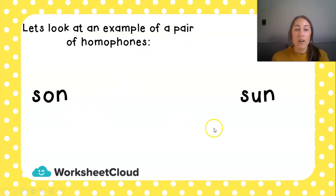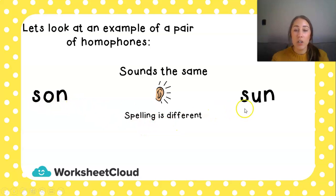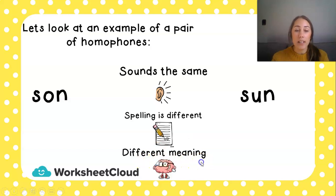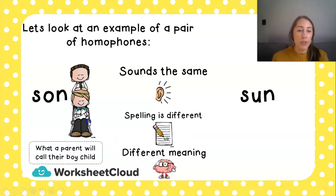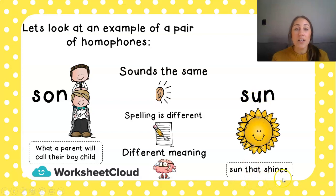Let's have a look at this pair of homophones: son and sun. They sound the same, but the spelling is different and they have different meanings. The first one is what a parent calls their boy child — if a mom or dad has a son, a boy, he is the son with a U. The second is the sun that shines and makes it light enough for us to see during the day.